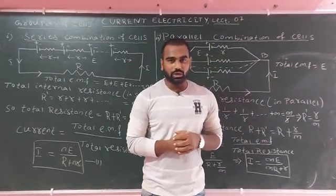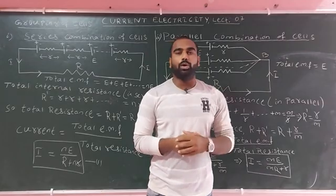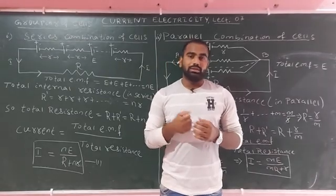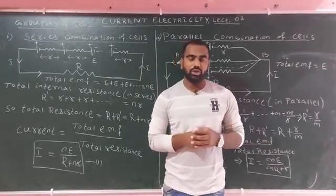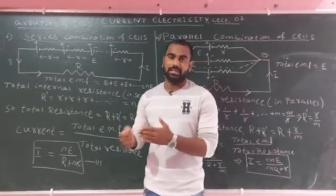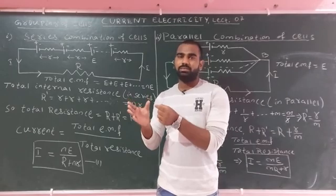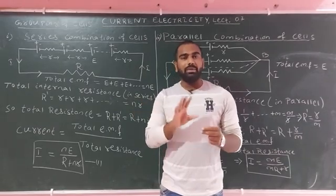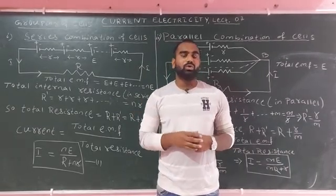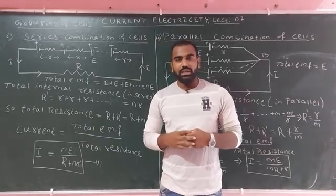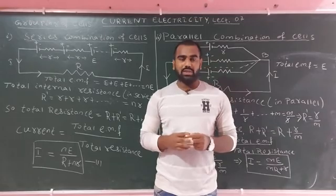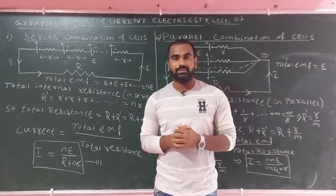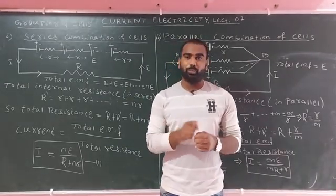Good morning everybody, welcome to lecture number seven of current electricity. Today we discuss the grouping of cells. A cell is a type of electrical device which converts chemical energy into electrical energy. The grouping of cells is normally of two types: series combination of cells, parallel combination of cells, and mixed grouping of cells.